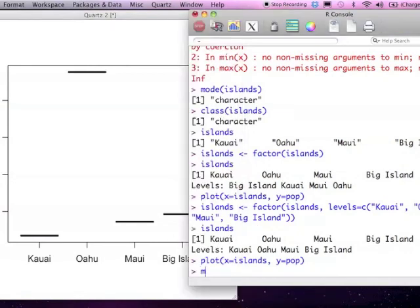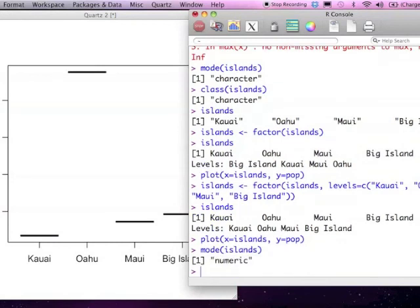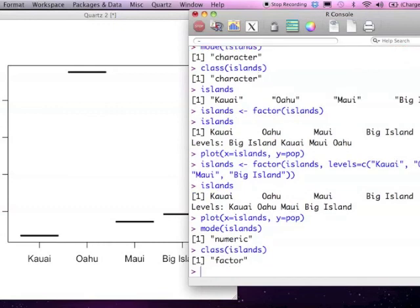Now let's check the mode of islands now. And now, instead of being character, it's actually numeric because internally, factors are stored as integers. If we look at the class of islands, it's a factor as it should be.